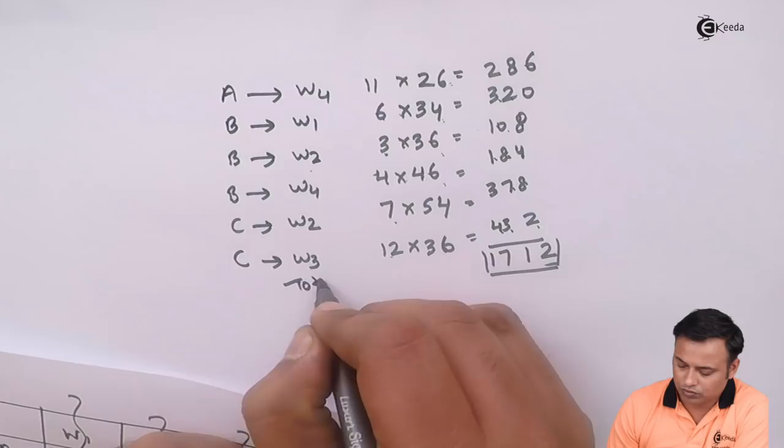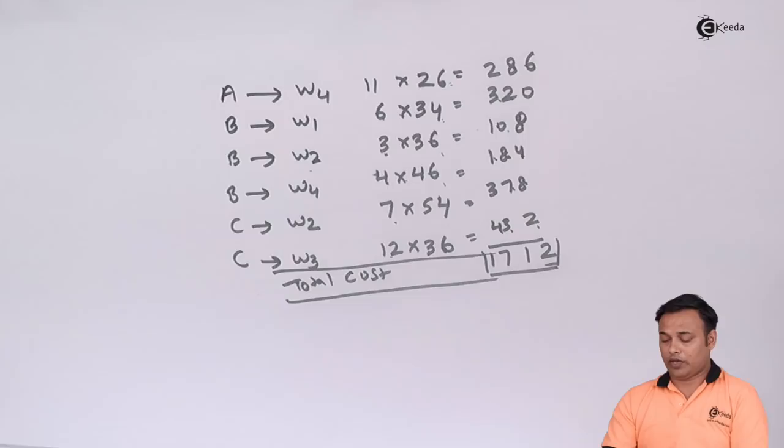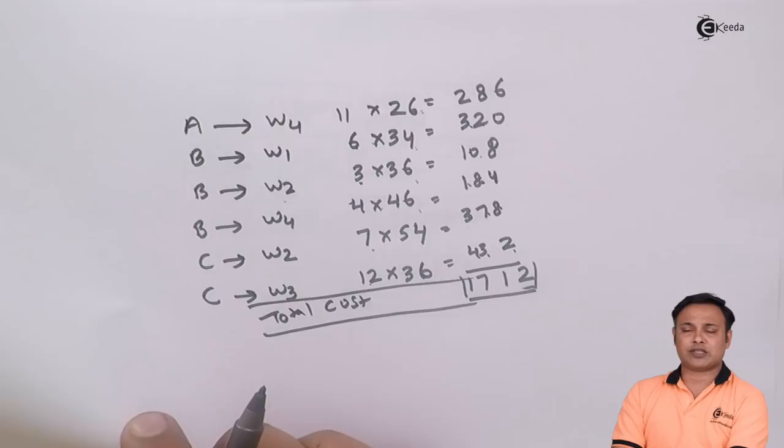So this is Vogel's Approximation Method. This method is the most scientific method. Please remember, whenever in the problem no method has been specified, you have to always solve the problem by this method. Thanks for watching the video. Do subscribe to our channel Ikeda by pressing the bell icon.